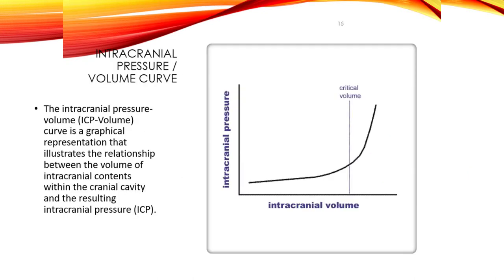Understanding the intracranial pressure-volume curve helps in understanding neurotrauma. In the compliance phase, the cranial contents exhibit compliance in the normal physiological range of intracranial volumes, and the intracranial space can accommodate small increases in volume with minimal pressure changes — the curve shows a flat slope indicating good compliance. In the steep phase of limited compliance, as intracranial volume increases beyond the physiological range due to brain swelling, hemorrhage, or mass effect, small increases in volume result in a substantial rise in intracranial pressure.